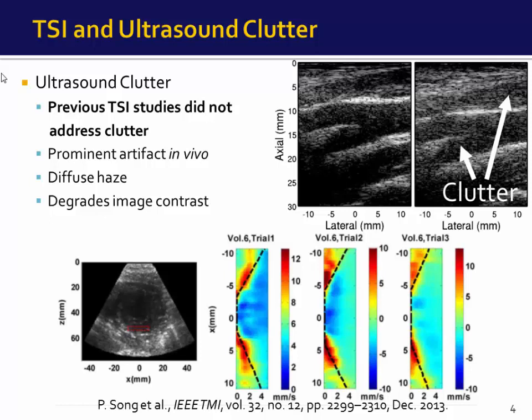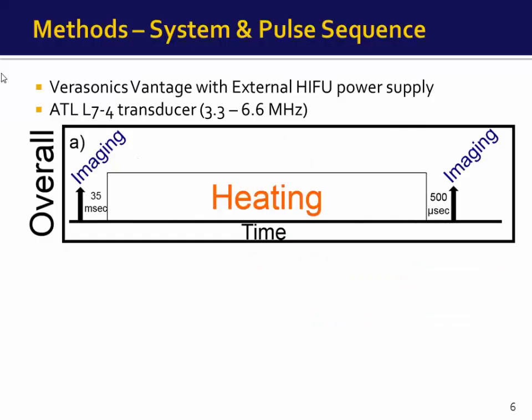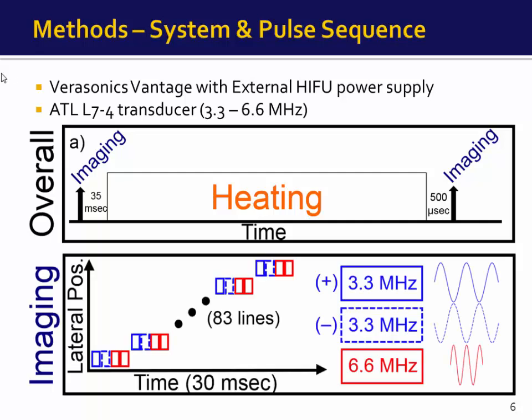We hypothesized that pulse inversion tracking could also be used to improve the estimation of the apparent strain generated during TSI. We did our work on a Verasonics Vantage system with an external HIFU power supply driving an ATL L7-4 transducer with a 3.3 to 6.6 MHz bandwidth. The sequence was imaging, then heating, then imaging again.